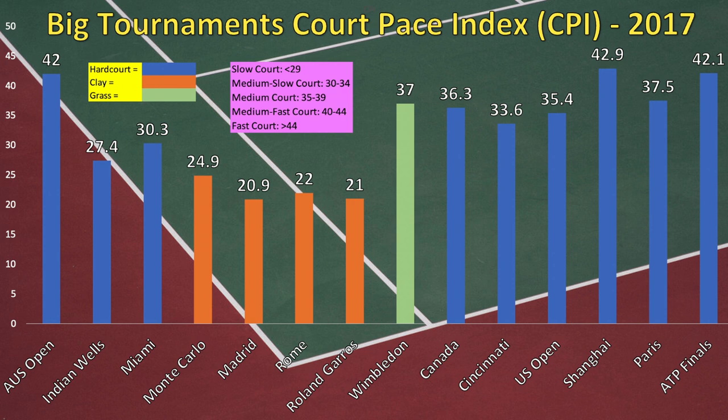Back to our other graphic for the Masters 1000s — our other nine biggest tournaments of the year. Indian Wells is interesting at 27.4, definitely one of the slowest hard courts you'll see on tour. Indian Wells is known for both slow and windy conditions out there in the California desert. Miami wasn't as quick as I thought it would be in 2017 — another hard court at 30.3, classified as a medium-slow court. I would have thought it would be more like a medium court, but the heat does make it a touch quicker.